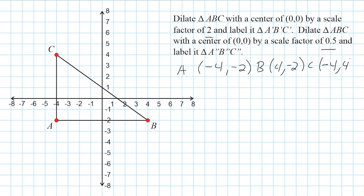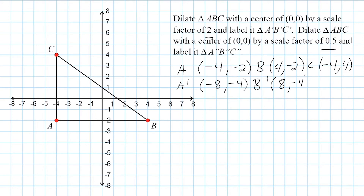We're simply going to take each one of these values and multiply them by two. That means A prime, the new location of A, is going to be at negative eight, negative four — we just doubled those values because our scale factor is two. And B prime will be located at positive eight, negative four.